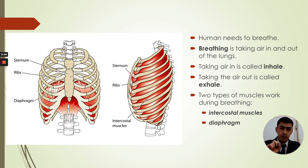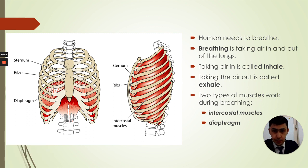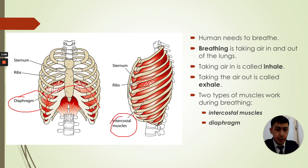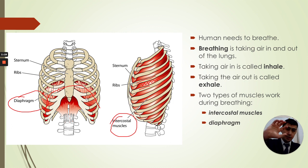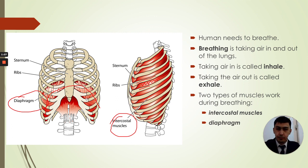We have two muscles that help us breathe. The first are the intercostal muscles — these are the muscles between the ribs. You can see the ribs here and between them you can see the muscles. The second muscle is called the diaphragm. The diaphragm is a muscle that separates the lungs and heart from the stomach, liver, intestines, and other organs.